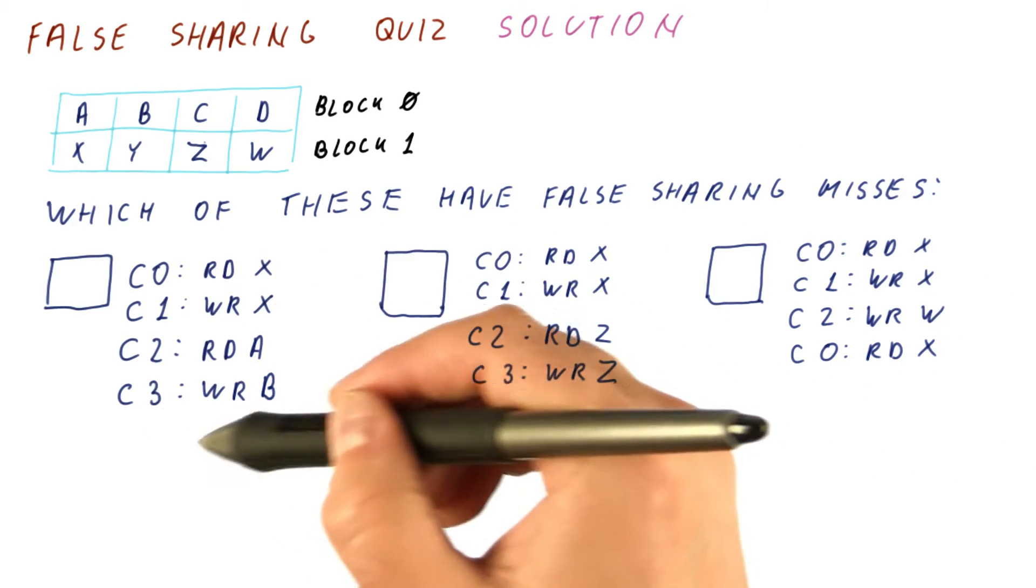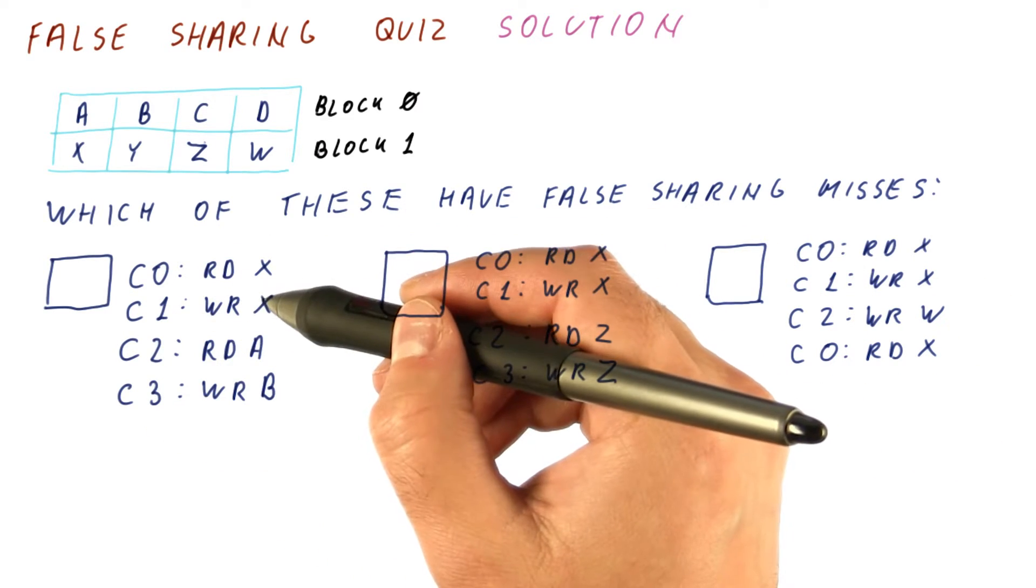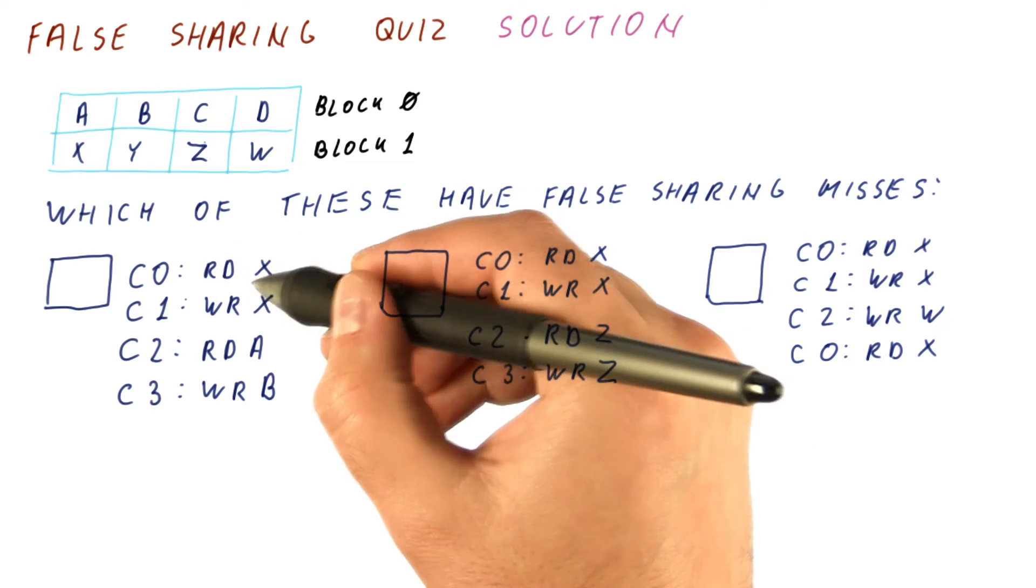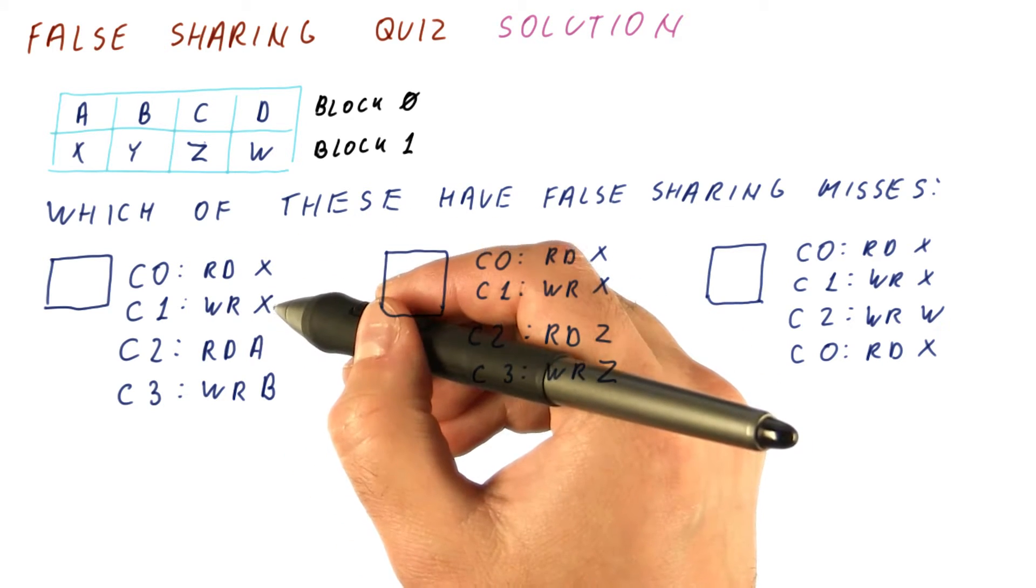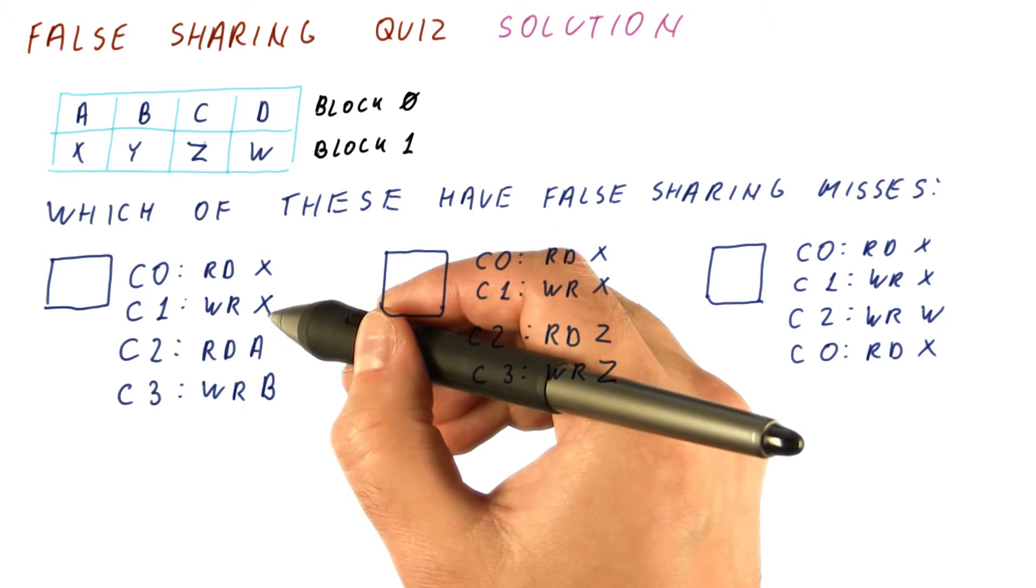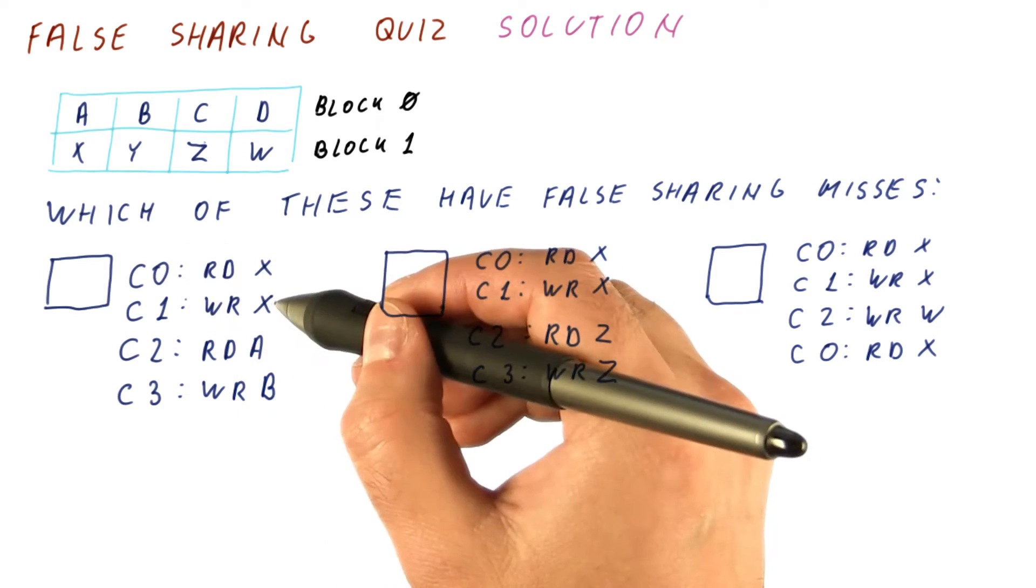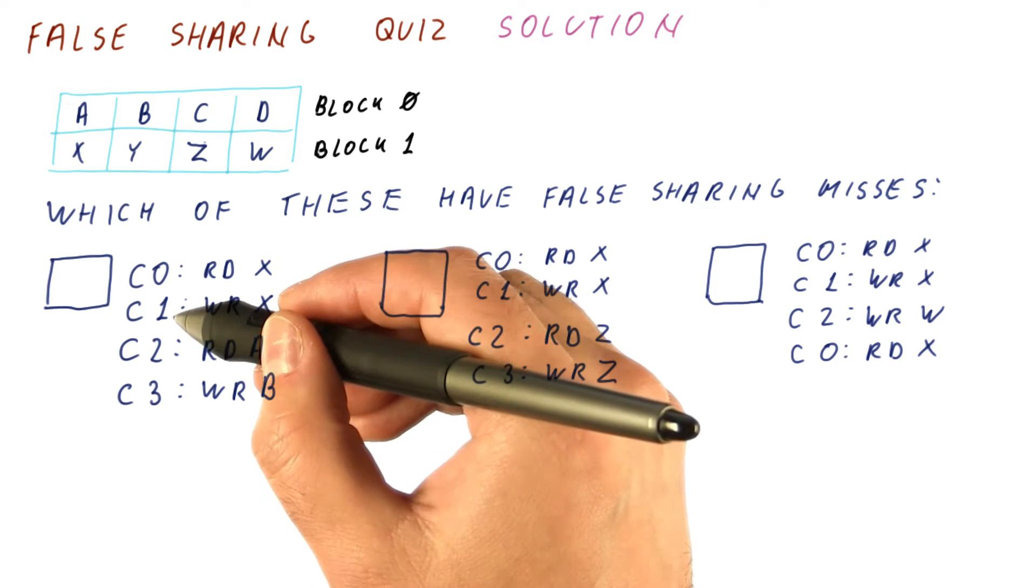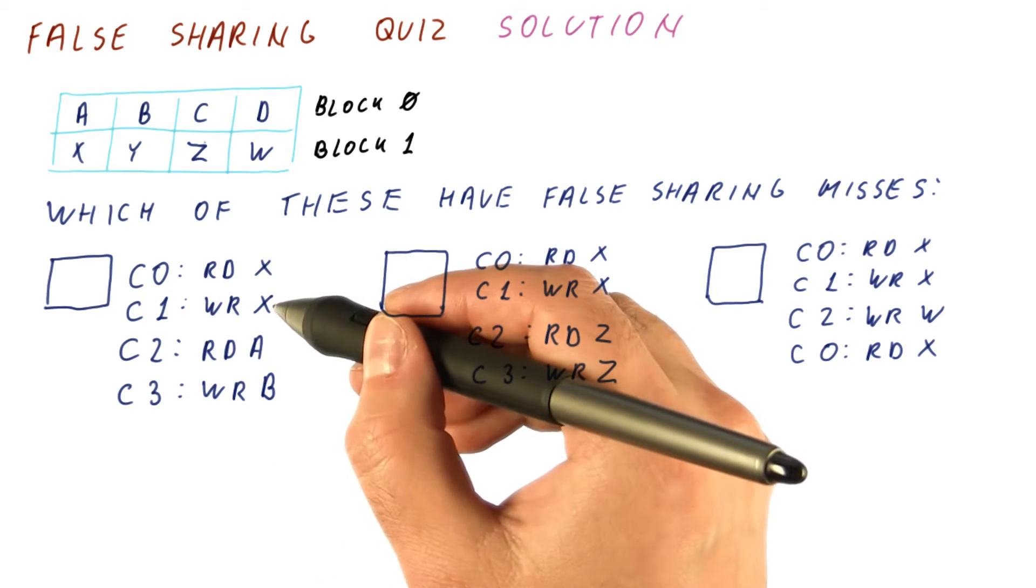So let's first look at this one. There is a read X and a write X. The first will be a miss. The second will also be a miss. Both of these are compulsory misses. X wasn't in C0's cache. X wasn't in C1's cache, so they have to be compulsory misses.